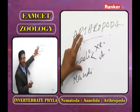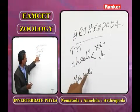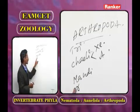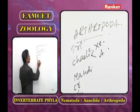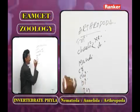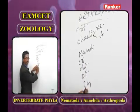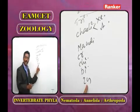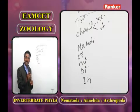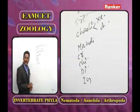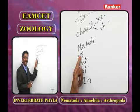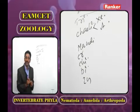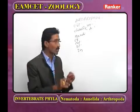The biggest subphylum in Arthropoda is Mandibulata. In Mandibulata, four classes are present: Crustacea, Chilopoda, Diplopoda, and Insecta. In class Insecta, three pairs of legs are present, hence it is called Hexapoda. The study of insects is called entomology. In Crustacea, biramous appendages are present.